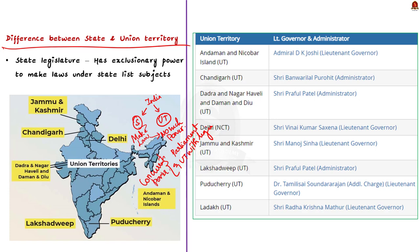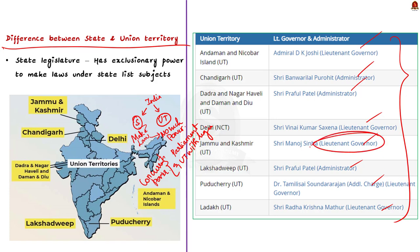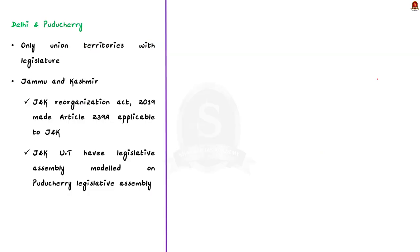In total, eight union territories are there in India. The nomenclature of the executive heads is not the same in every union territory. For the UTs of Delhi, Puducherry, Andaman & Nicobar, Jammu & Kashmir, and Ladakh, the executive head is called Lieutenant Governor, while for the other three union territories, it is called Administrator. Only Delhi and Puducherry have a legislature of their own.